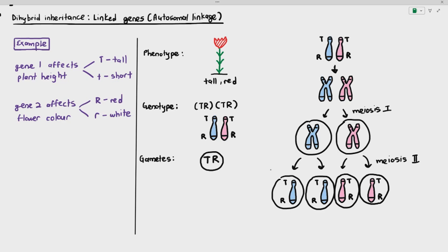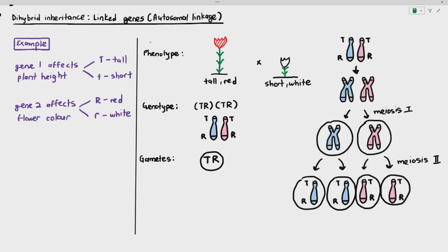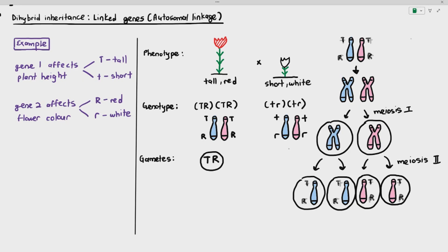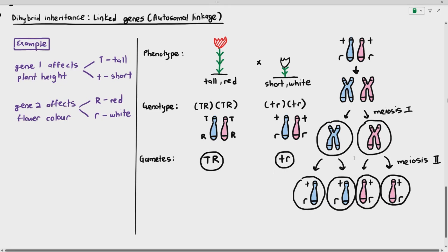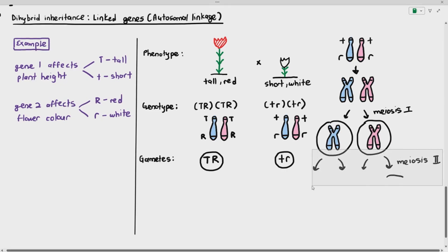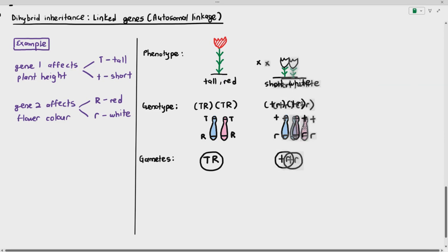The homozygous recessive parent is short and white, with genotype (tr)(tr). Looking at its chromosomes, it only has small t small t and small r small r. All gametes it produces will just be small t small r, no matter what. Crossover and independent assortment will not produce any genetically different gametes here either.